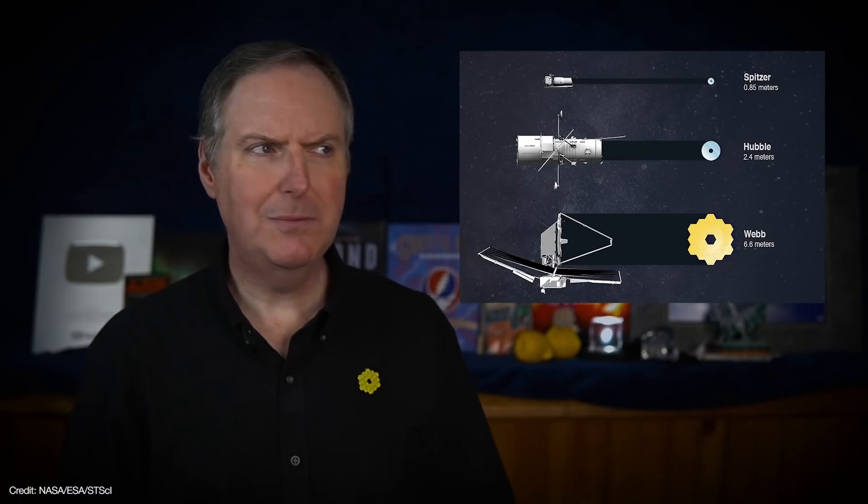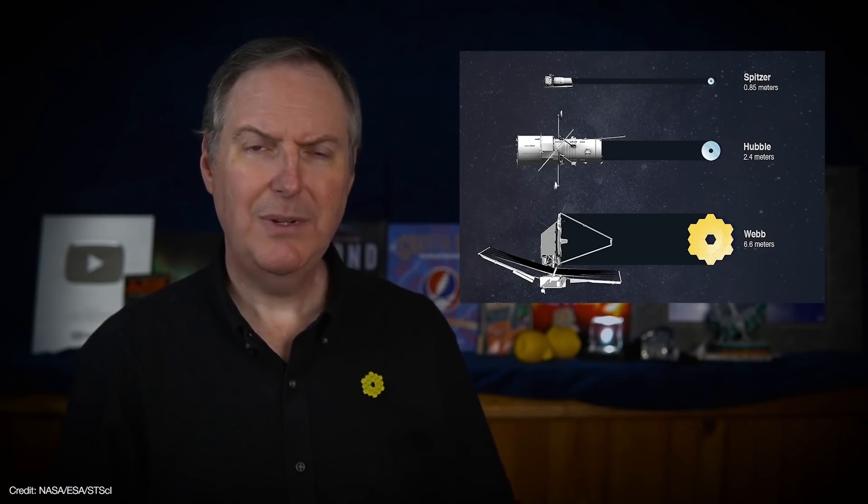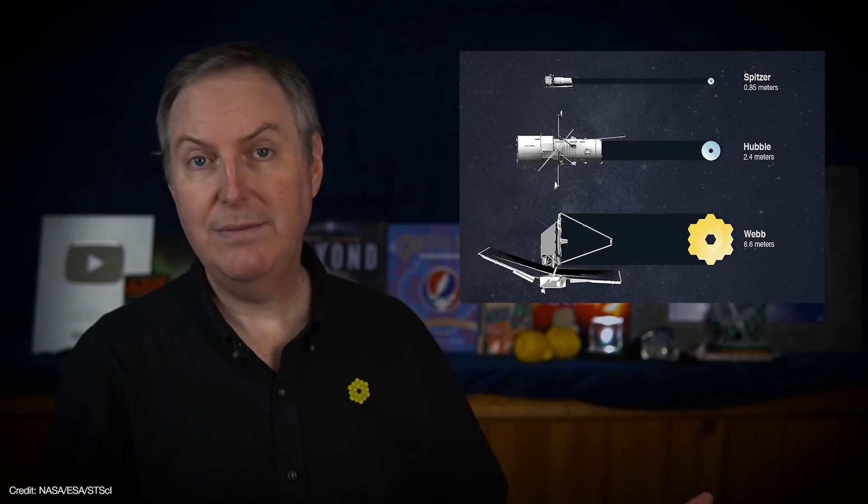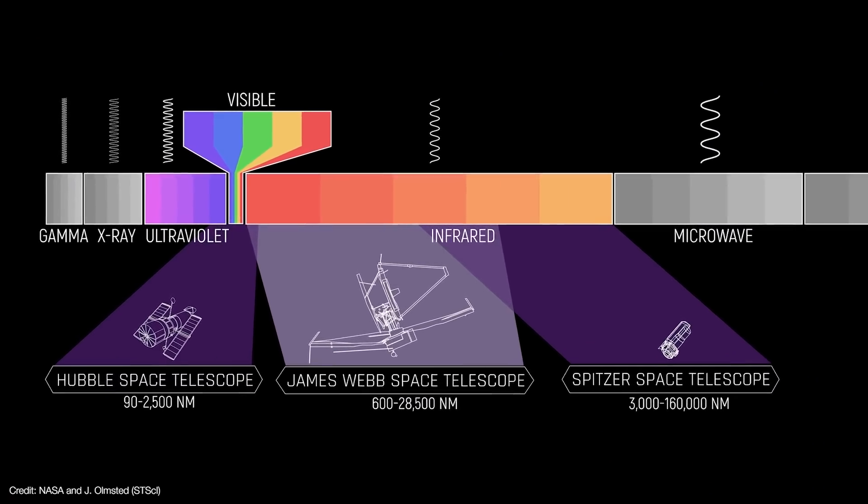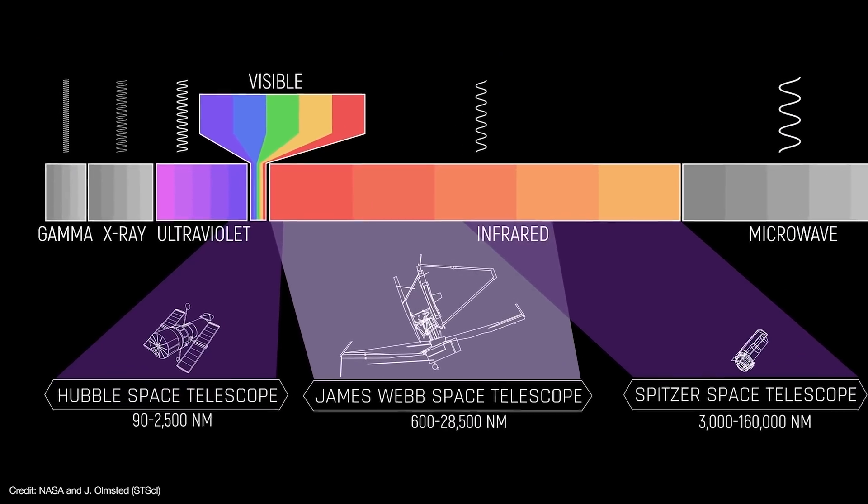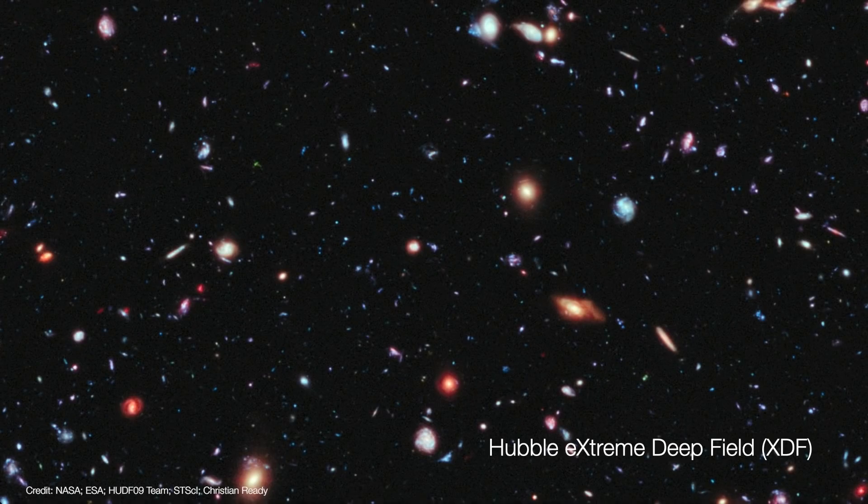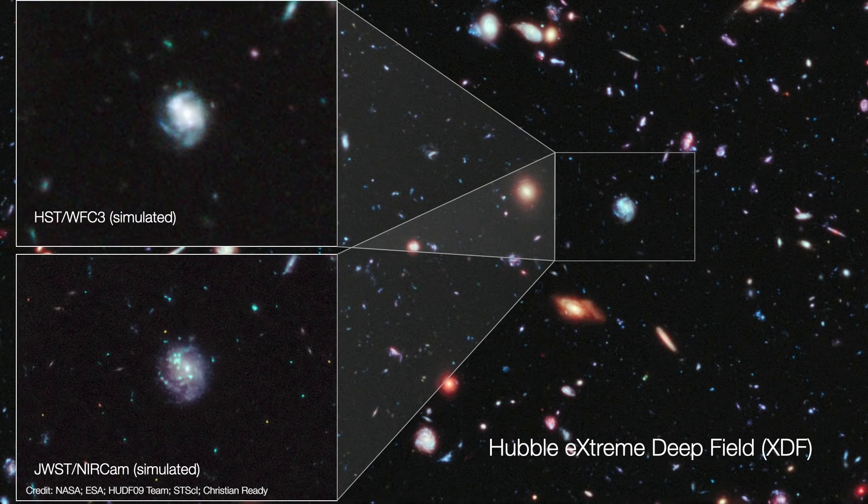And you might be wondering, well, why then is Webb considered to be more powerful than Hubble? Well, the answer is a combination of resolution, sensitivity, and wavelength coverage. First, Webb certainly has a higher resolution than Hubble in the near-infrared part of the spectrum. And Webb's near-infrared camera actually has 16 times the pixel resolution of Hubble's wide-field camera 3.